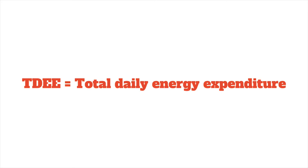If you were to consume roughly the same amount of calories as your TDEE, you would be in a neutral calorie balance. If you consume more calories than your TDEE, you would be in a positive calorie balance, and if you consume fewer calories than your TDEE, you would be in a negative calorie balance.